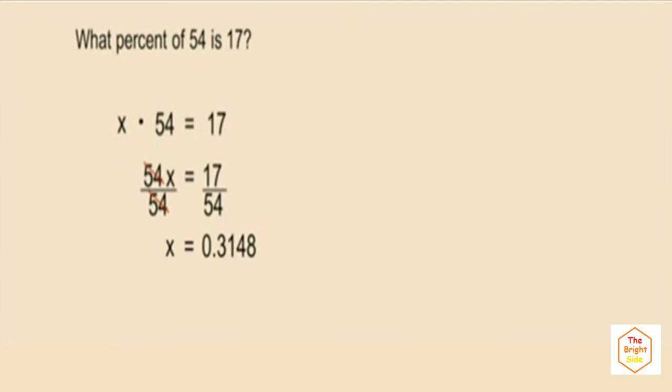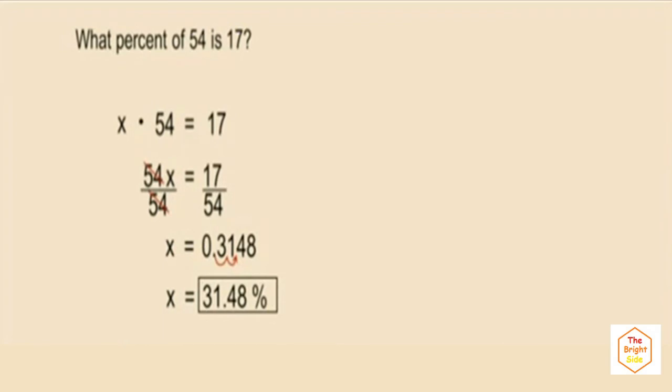And to convert a decimal to a percent, Charlie, we move the decimal two places to the right. So to write our final answer, it's 31.48%, and our percent is rounded to the nearest hundredth. So to answer this question, what percent of 54 is 17? The answer is 31.48%, rounded to the nearest hundredth of a percent.